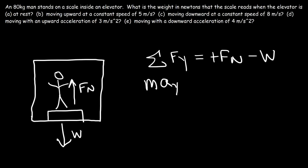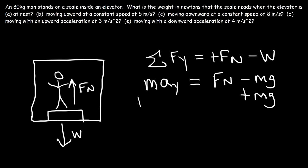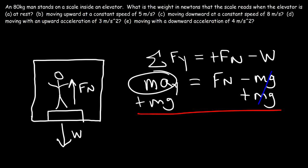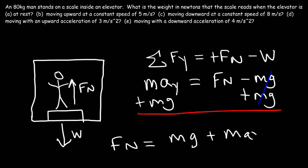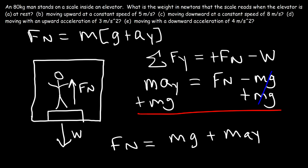According to Newton's second law, F = ma. The elevator is at rest so acceleration is zero, but I want to derive a formula to answer parts a through e. Our goal is to isolate the normal force. The weight force is mg, so we add mg to both sides: ma + mg = N. Factoring out m gives us the normal force equals m times (g + ay). This is the equation to use for this type of problem.